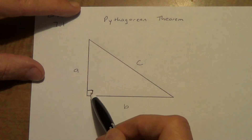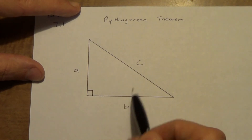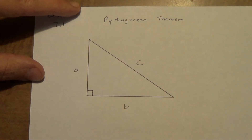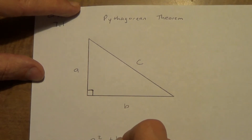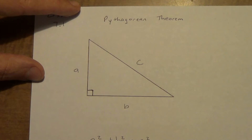The hypotenuse is across from the right angle. If you ever get this mixed up and you put C on a leg, you're automatically going to get things wrong. So A squared plus B squared equals C squared — the sum of the squares of the legs equals the square of the hypotenuse.